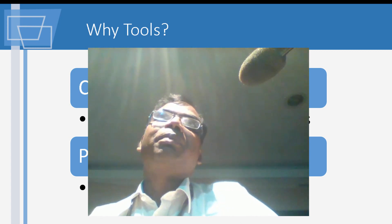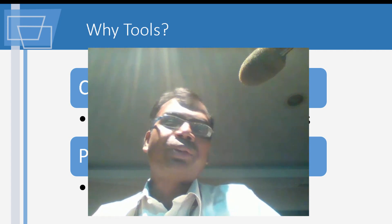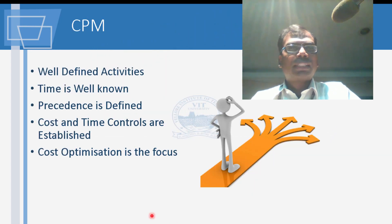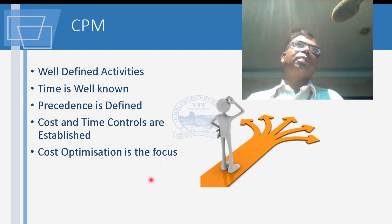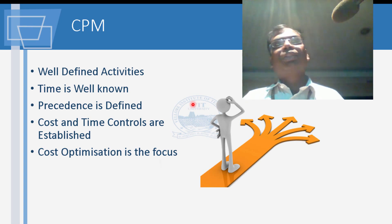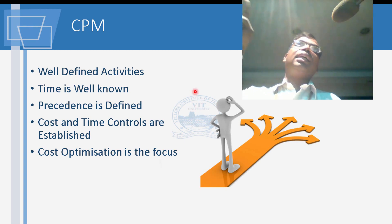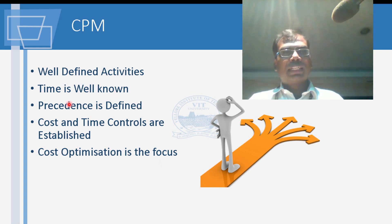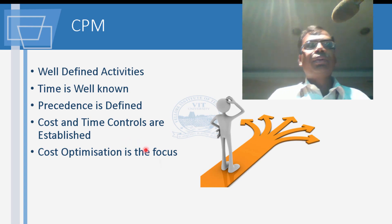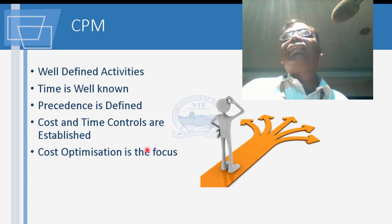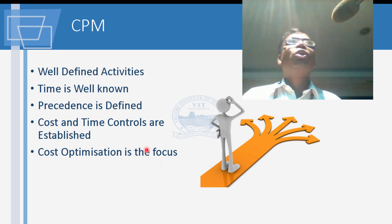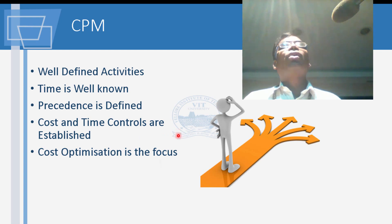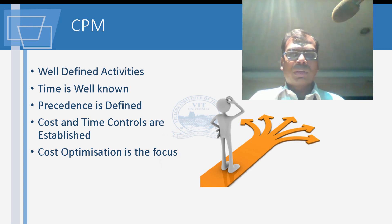CPM is good for repetitive projects, while PERT is for research-type or one-shot projects. In CPM, you define activities first, then duration, then precedence — what comes before or after. Controls or milestones are established, and cost optimization is a key focus of CPM.